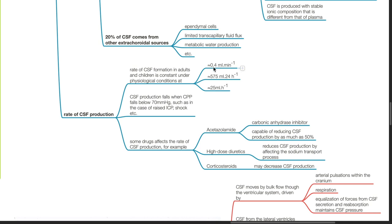Depending on literature, it ranges from 0.3 to 0.6 mL per minute, or 575 mL per day, or 25 mL per hour. CSF production falls when cerebral perfusion pressure falls below 70 mmHg, such as in the case of raised ICP or shock.